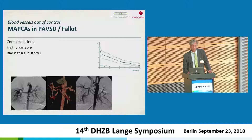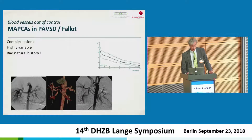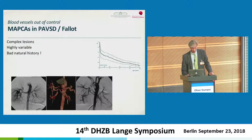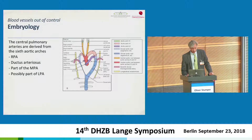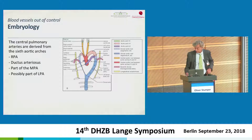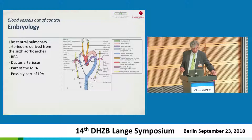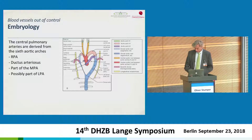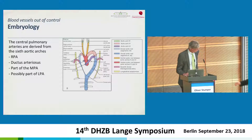MAPCAs in pulmonary atresia with VSD — it's a really complex lesion, highly variable, with a bad natural history as we all know. There is however still debate about what these MAPCAs actually are, and with that I want to recap some embryology. We have to remind ourselves that central pulmonary arteries are derived from the sixth aortic arches, which give rise to the right pulmonary artery, the ductus, and possibly part of the left pulmonary artery.